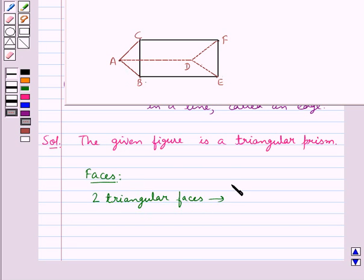ABC and DEF are the two triangular faces of this triangular prism. Then it has three rectangular faces,